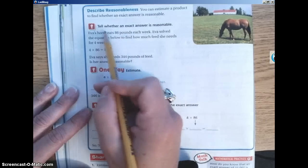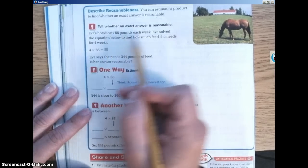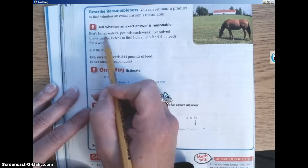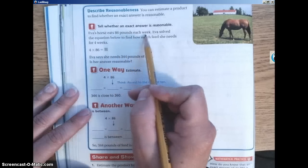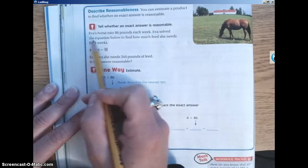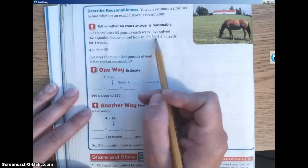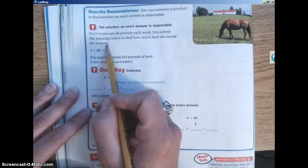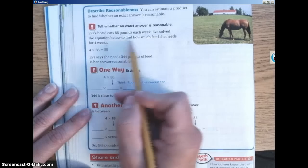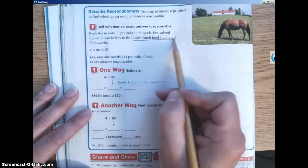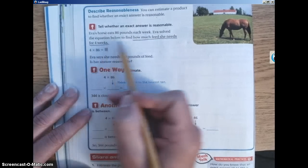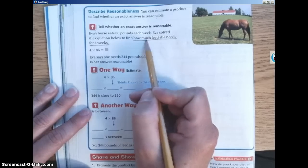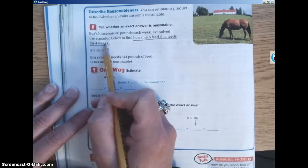If we go down here where it says tell whether an exact answer is reasonable, we're going to go through this problem here with Eva's horse. Read this with me. Eva's horse eats 86 pounds each week. Eva solved the equation below to find out how much feed she needs for four weeks. So first, we need to underline what we need to know. So we need to know how much feed she needs for four weeks. This one is not in the form of a question. It's a statement, but it's still what we need to find. We need to find how much feed she needs for four weeks.